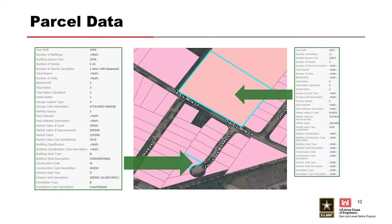Most commonly this comes in the form of parcel data, but not every community has robust parcel data. And even where parcel data exists, it doesn't have information on everything. So you usually have to make assumptions about structure attributes, especially around their foundation heights.